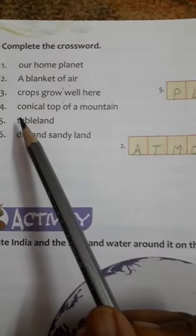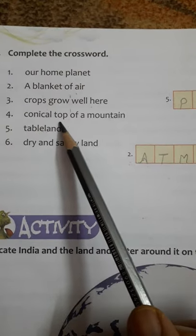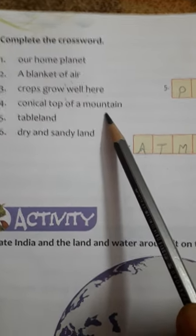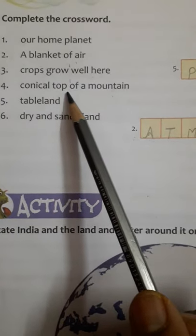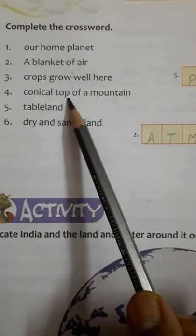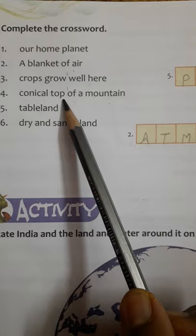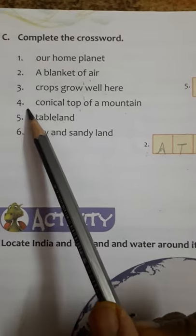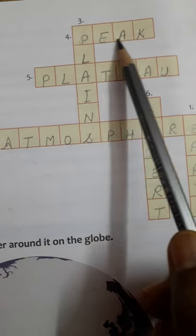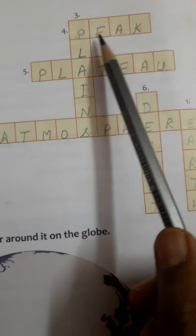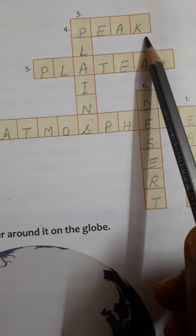Number 4, conical top of a mountain. What do we call the conical top of a mountain? That is peak. Number 4 is peak. Here is number 4, you will write it horizontally: P-E-A-K.